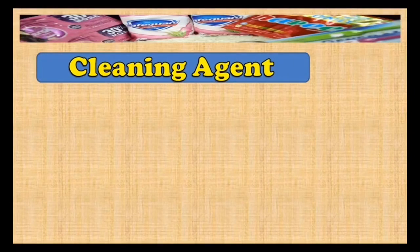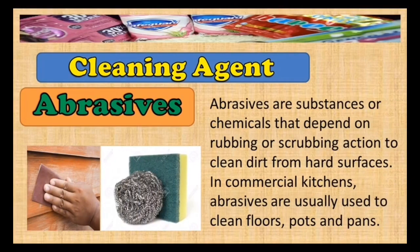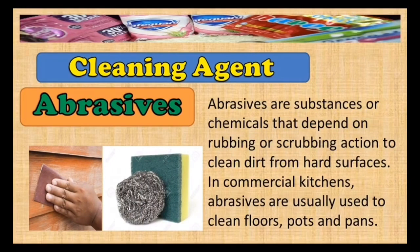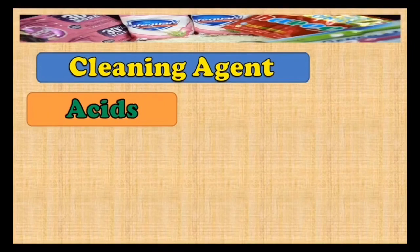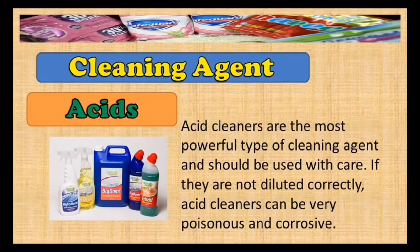Abrasives are substances or chemicals that depend on rubbing or scrubbing action to clean dirt from hard surfaces. In commercial kitchens, abrasives are usually used to clean floors, pots, and pans. Acid cleaners are the most powerful type of cleaning agent and should be used with care. If they are not diluted correctly, acid cleaners can be very poisonous and corrosive.